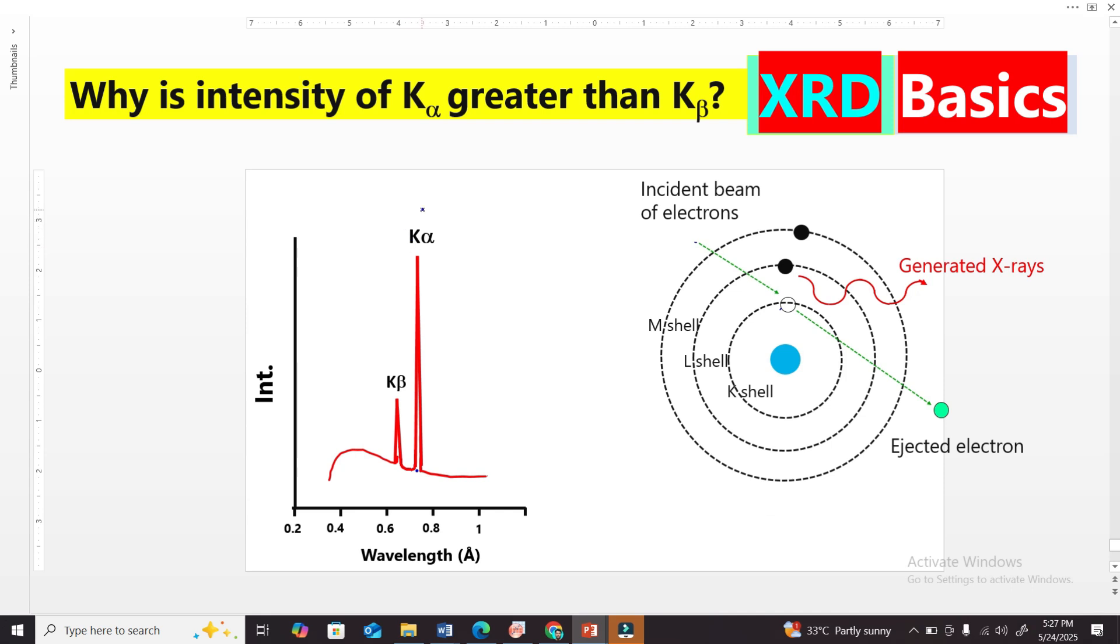Let's discuss why K-alpha line in X-ray spectrum has higher intensity than K-beta line. We know that in X-ray diffraction analysis, we use X-rays.